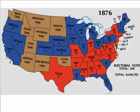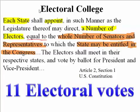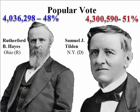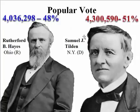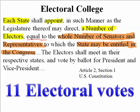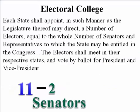The Constitution says the Electoral College chooses the president, not the people. That's why, even though Samuel J. Tilden won 51% of the popular vote — more than Rutherford B. Hayes — he is not going to be president, because the Electoral College hadn't chosen him.